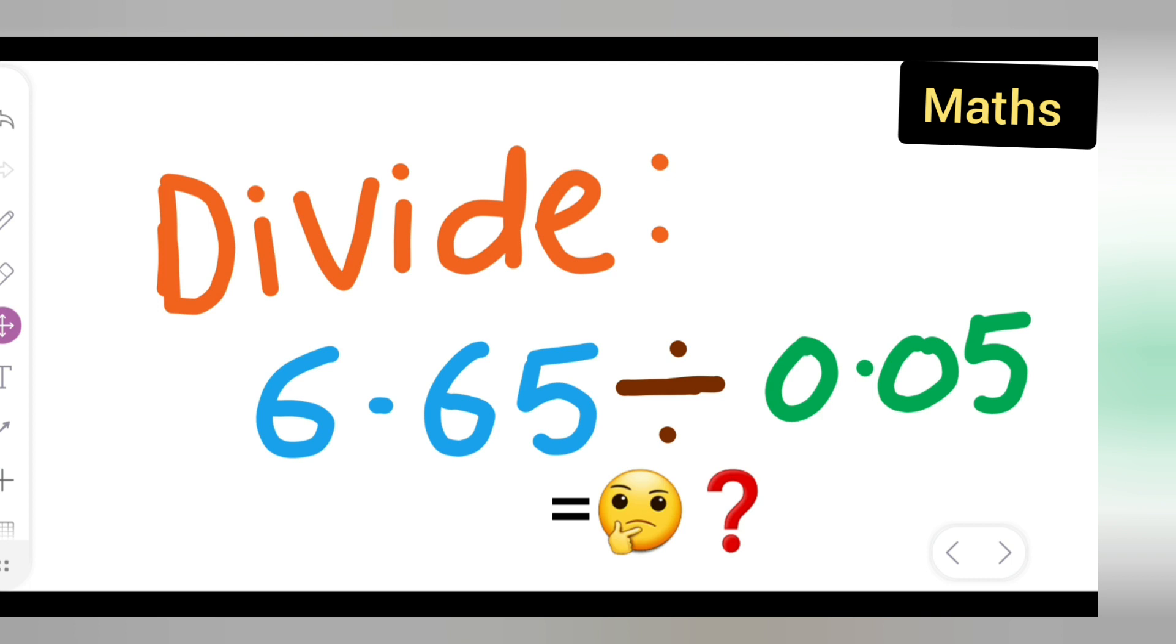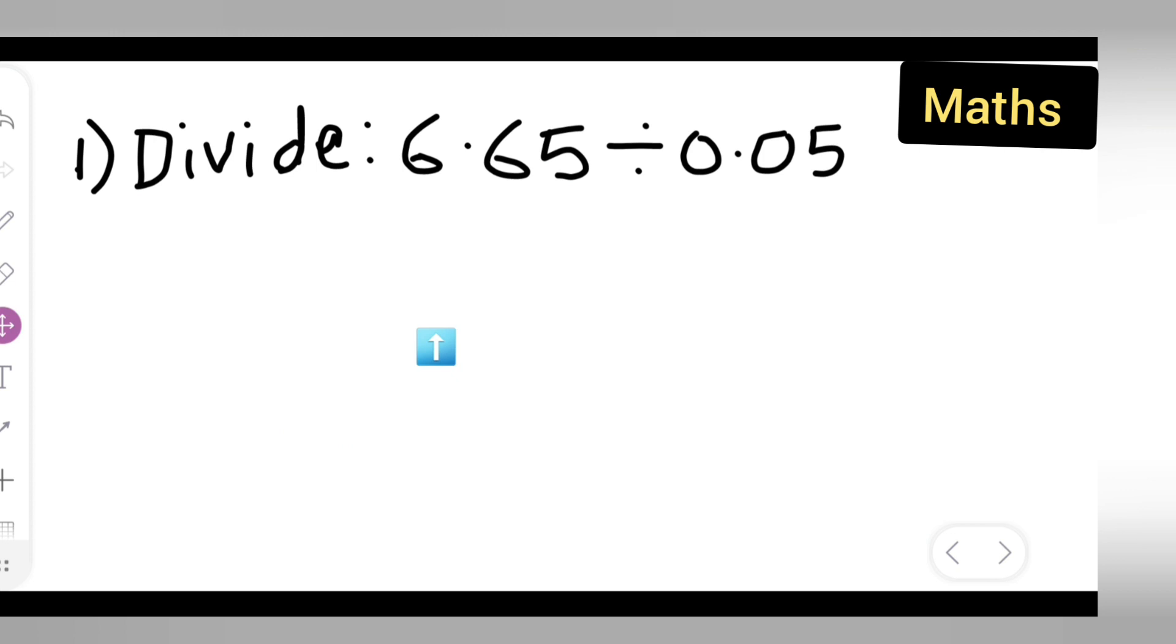So let us see how to divide given numbers. First you can take down the question. Divide 6.65 by 0.05.